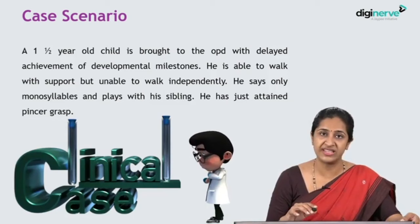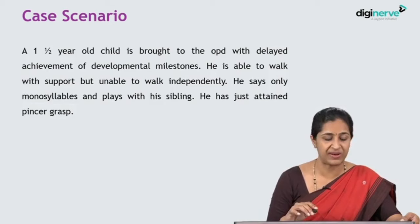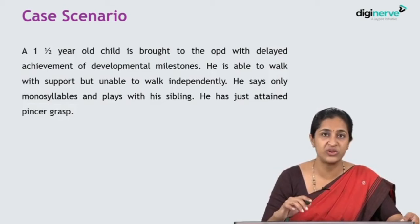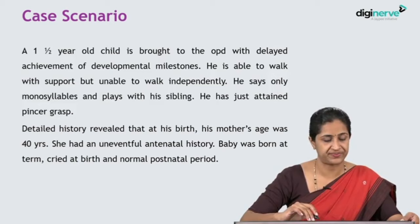The clinical case scenario: A one-and-a-half-year-old child is brought to the OPD with delayed achievements of developmental milestones. He is able to walk with support but unable to walk independently. He says only monosyllables and plays with his sibling. He has just attained a pincer grasp. Detailed history revealed that at his birth, his mother's age was 40 years. She had an uneventful antenatal history. The baby was born at term, cried at birth, and had a normal postnatal period.